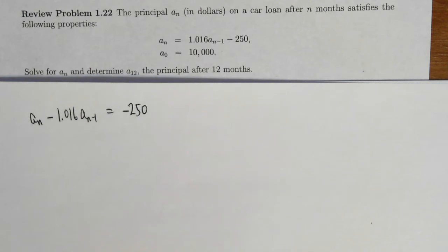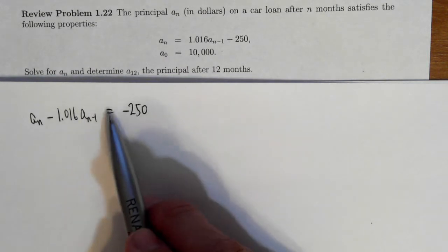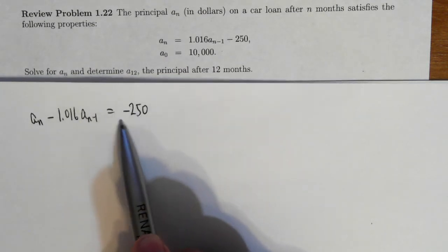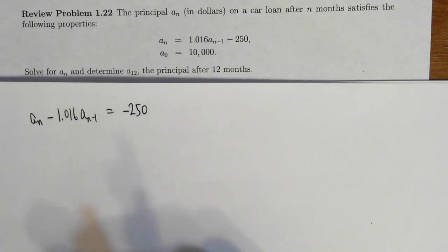It is a first order linear recurrence relation. It has constant coefficients. And also we see that it is non-homogeneous because the right-hand side is not equal to zero.